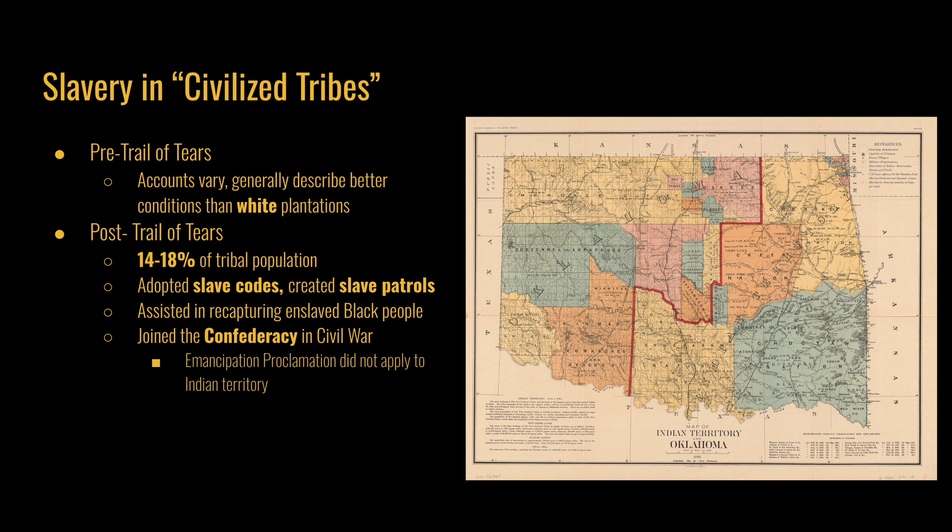The Emancipation Proclamation, issued in 1863, did not apply to enslaved Black people in Indian territory. Slavery continued to exist until the 13th Amendment in 1865, and further until 1866, when the Choctaw and Chickasaw finally freed those who were enslaved among them.